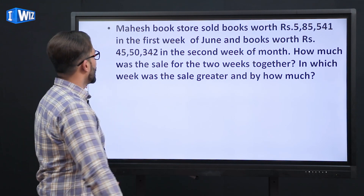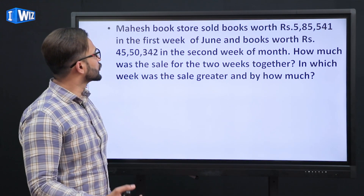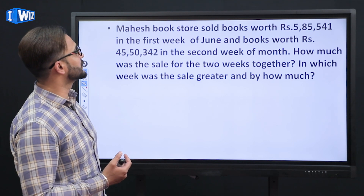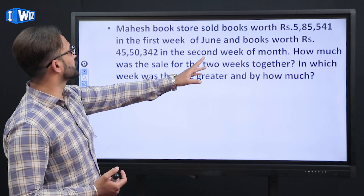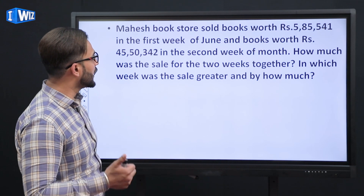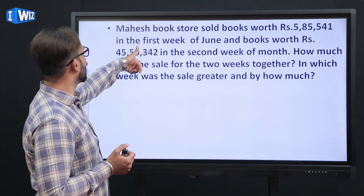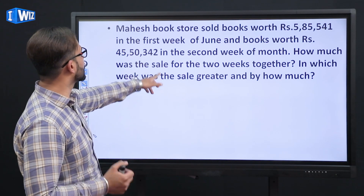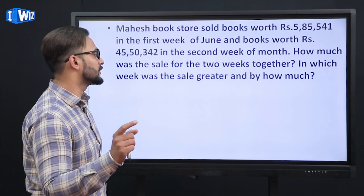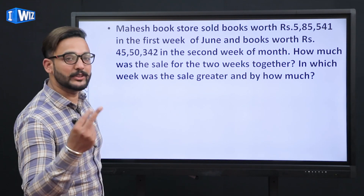Our first question: Mahesh Bookstore sold books worth rupees 5,85,541 in the first week of June and books worth rupees 45,50,342 in the second week of the same month. How much was the sale for the two weeks together?